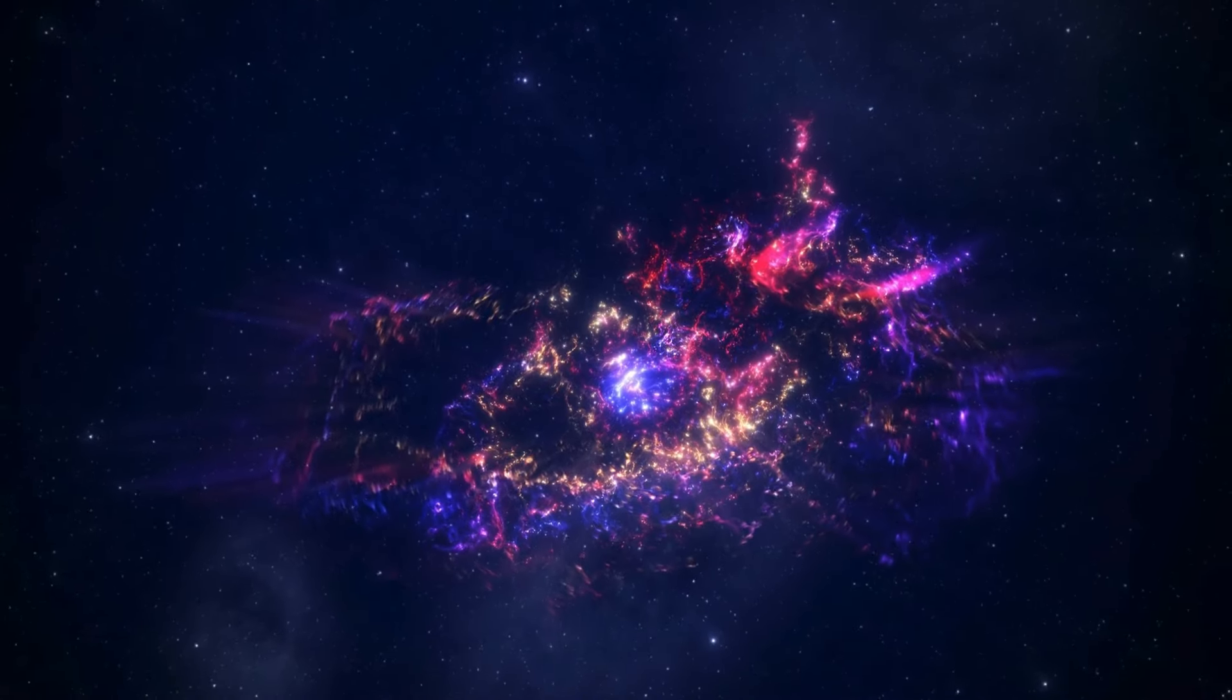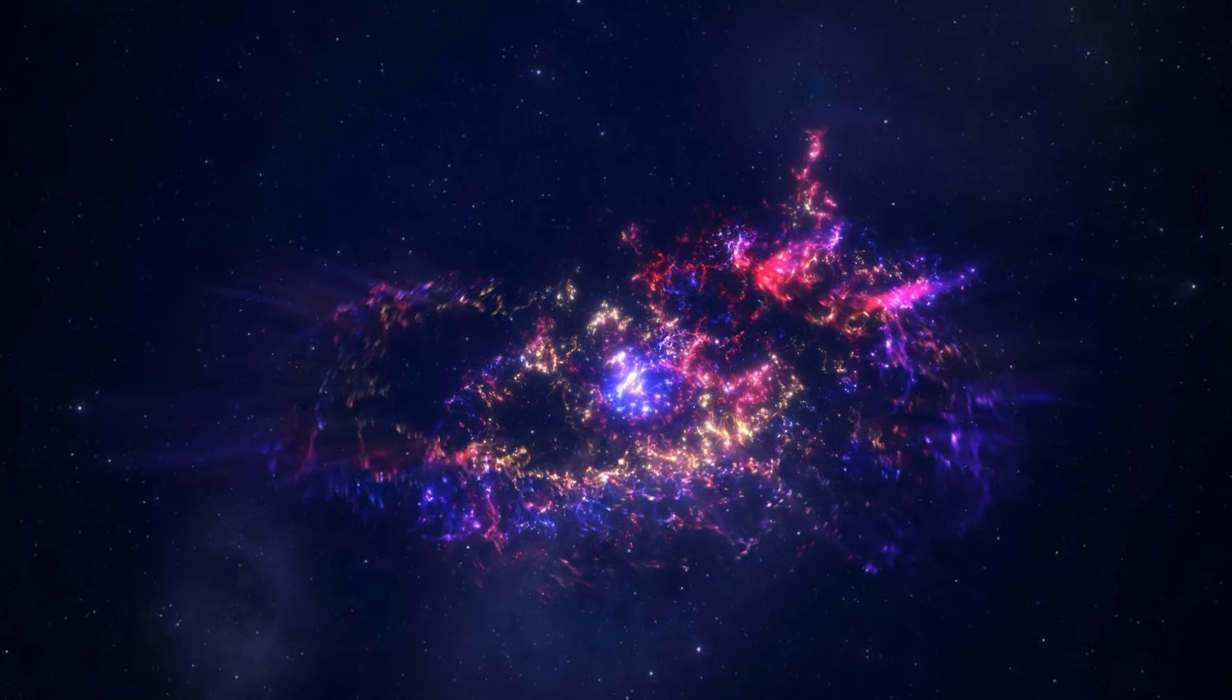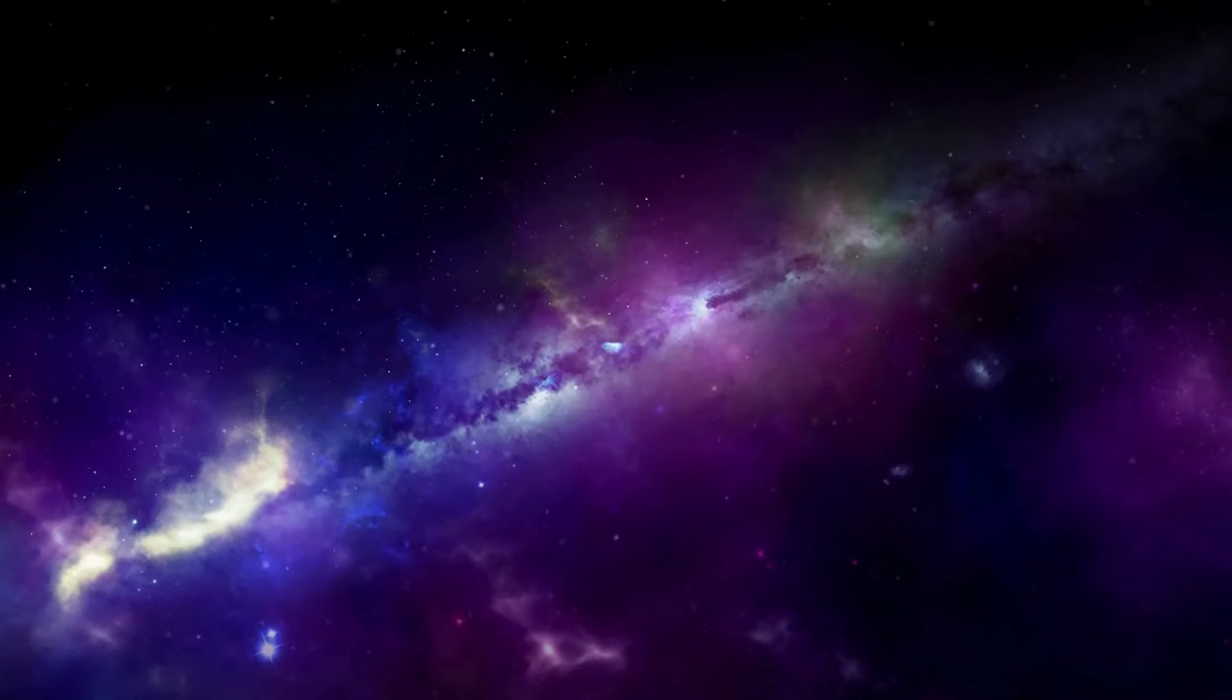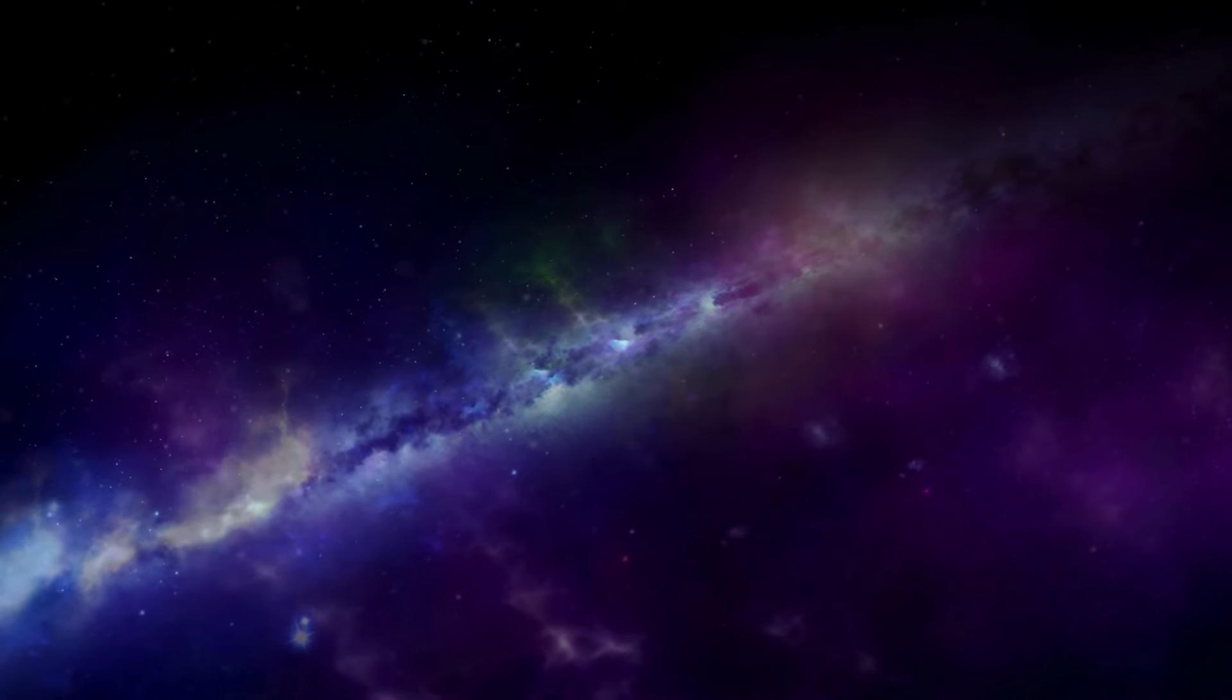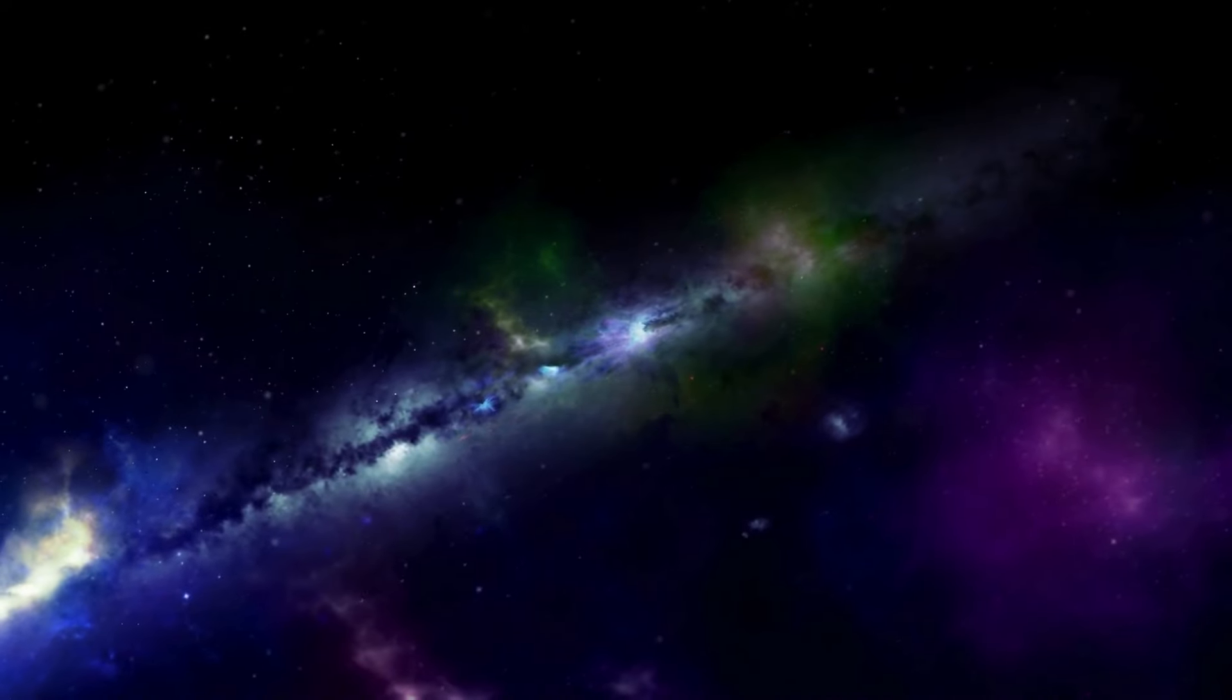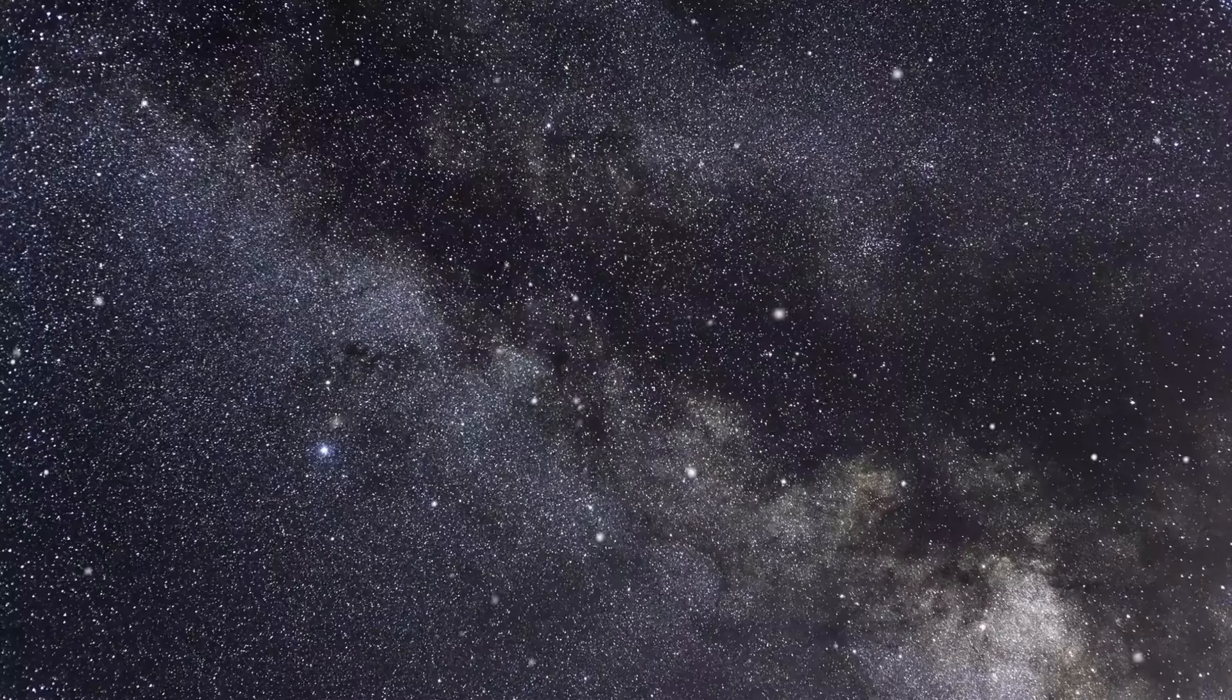Finally, the Population 1 stars, including our sun, emerged as cosmic latecomers. They formed from enriched gas clouds mingling with remnants from the earlier Population 2 stars. Some of these Population 2 stars also went out with a bang, contributing more heavy elements to the cosmic recipe.